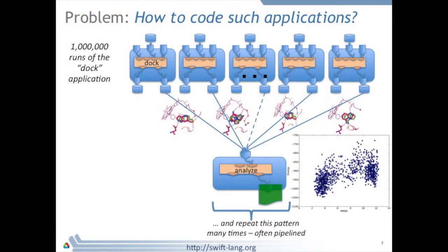Swift, our programming model, automates the parallelization of codes. If I have to run 100,000 copies of DOC, Swift will automatically determine which DOC runs can be parallelized and executed when.